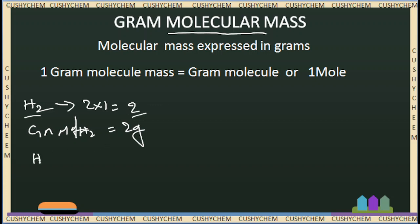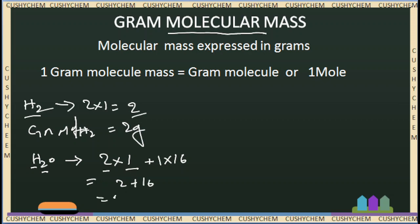For example, H₂O. The gram molecular mass of H₂O is: 2 times 1 for hydrogen's atomic mass, plus 1 times 16 for oxygen. So 2 plus 16 equals 18. Gram molecular mass of water is 18 grams.